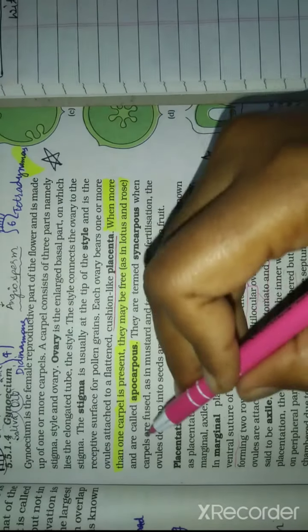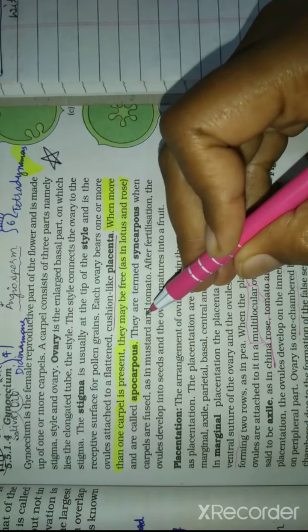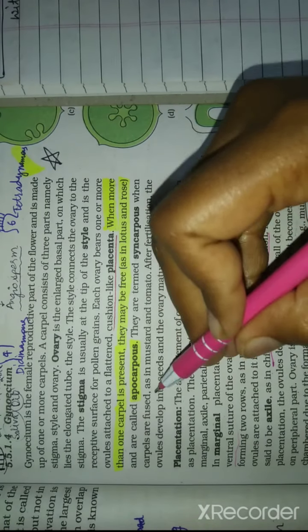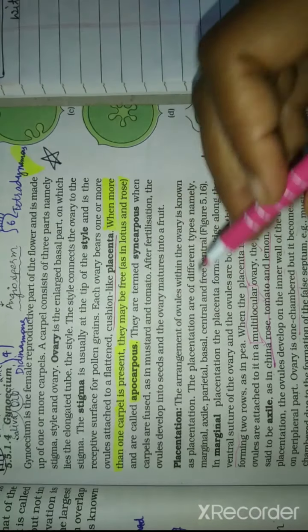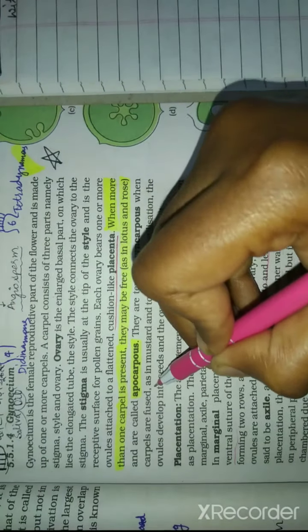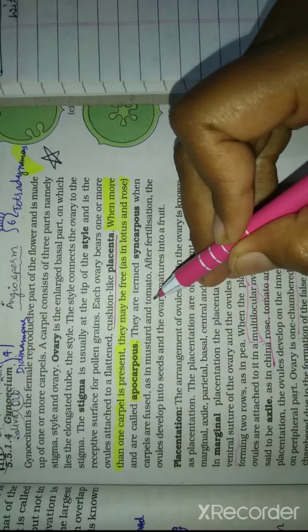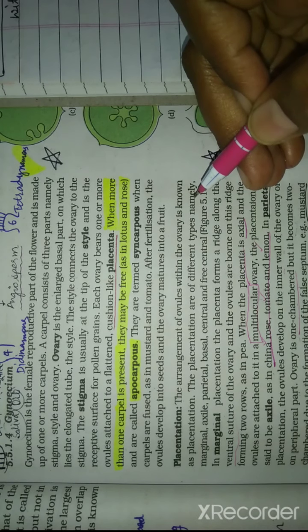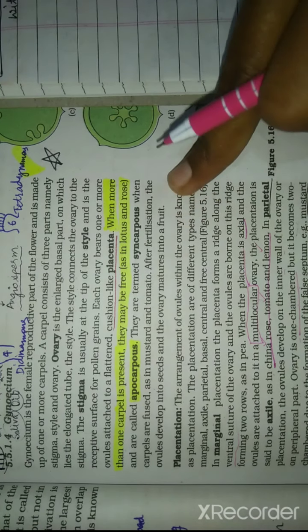When more than one carpel is present, they may be free as in lotus and rose, called apocarpus condition. They are termed syncarpus when carpels are fused, as in mustard and tomato. After fertilization, the ovule develops into seed and ovary matures into fruit.